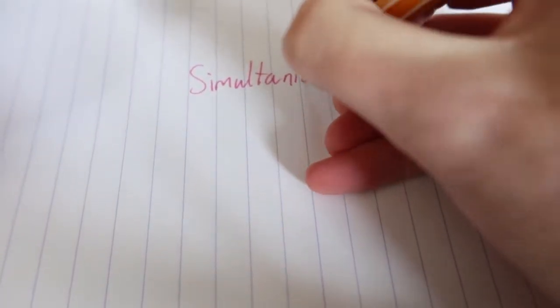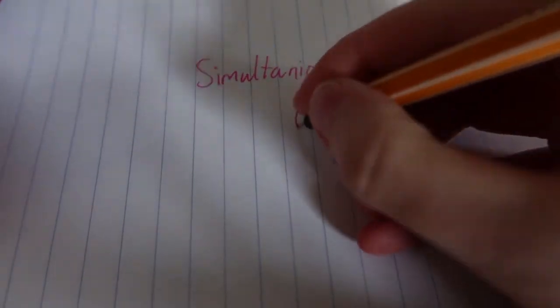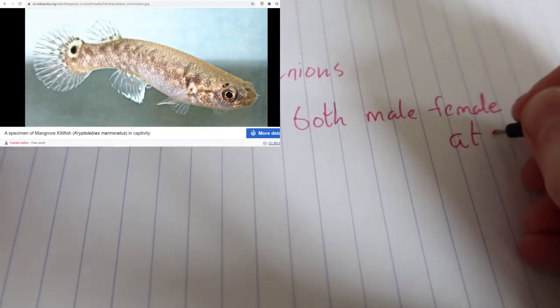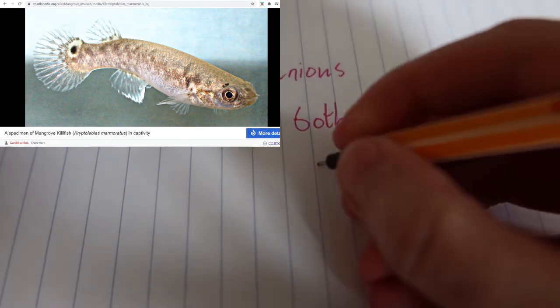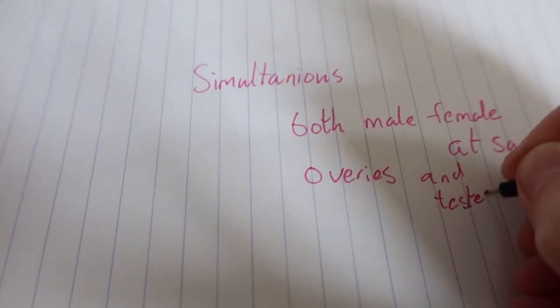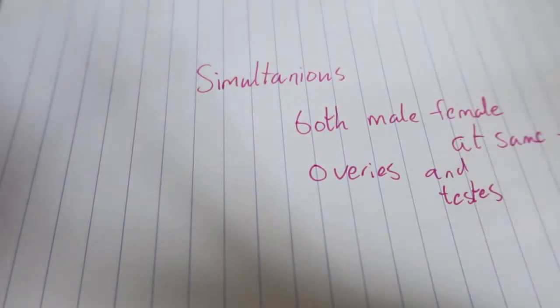The first type of hermaphroditism is simultaneous. Simultaneous hermaphrodites are both male and female at the same time. These will have ovaries and testes. This does not mean that they can self-reproduce, although in species like Kryptolebias marmoratus—the mangrove killifish—they can self-reproduce. This is extreme inbreeding. It is very useful for colonizing new areas though, and it's not that common.